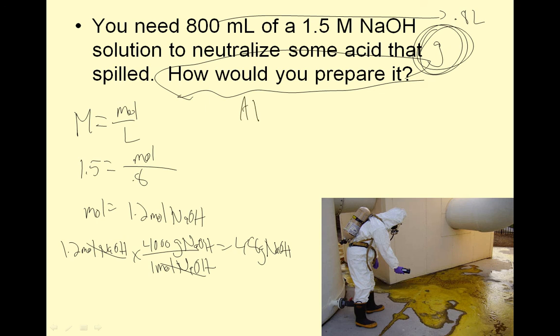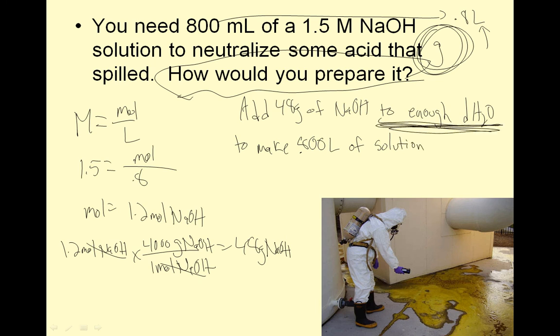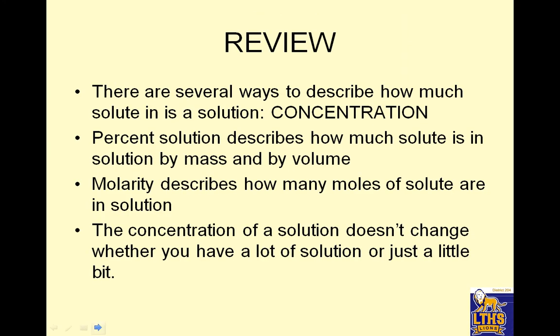How do you make it? This is the part that you need to do. Add 48 grams of NaOH. Now here's your temptation: you want to say to 0.8 liters. Don't say it. Because that is the liters of solvent. This is the part you need: to enough distilled water - the little d means distilled water - to make 0.800 liters of solution. Add to enough distilled water. That's what you need to do.